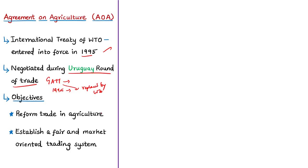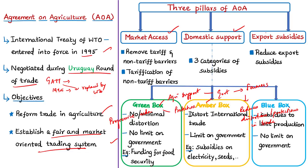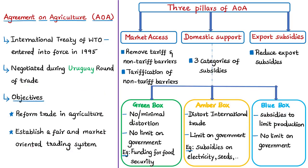The Agreement on Agriculture aims at progressive reductions in agricultural support and protection provided by governments to their farmers, which would correct and prevent restrictions and distortions in world agricultural markets. If one country protects its farmers by giving subsidies, other countries may be affected. This agreement focuses on three broad areas: market access, domestic support, and export subsidies.